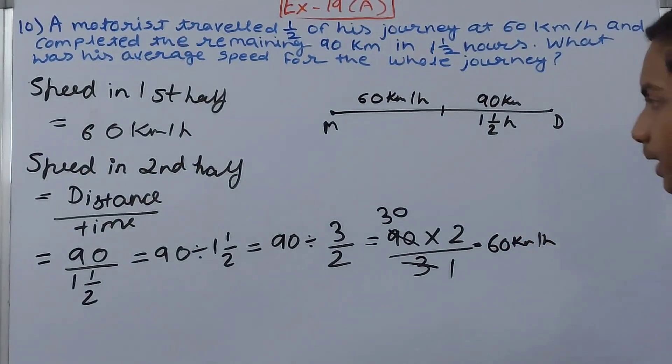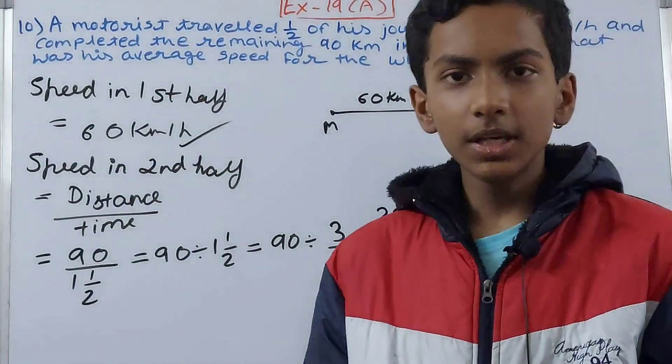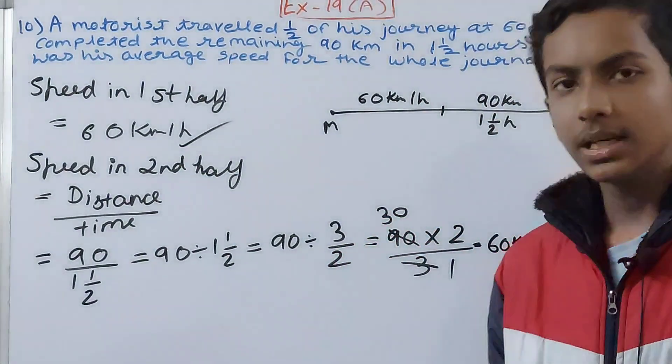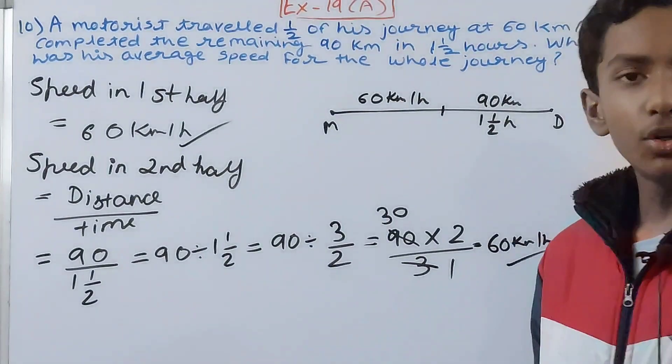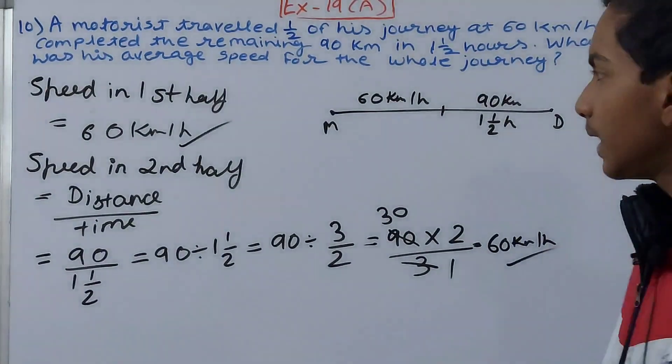In both the halves, the speed is the same, so it's going to be very easy to calculate the average speed. Average speed is nothing but the total speed.